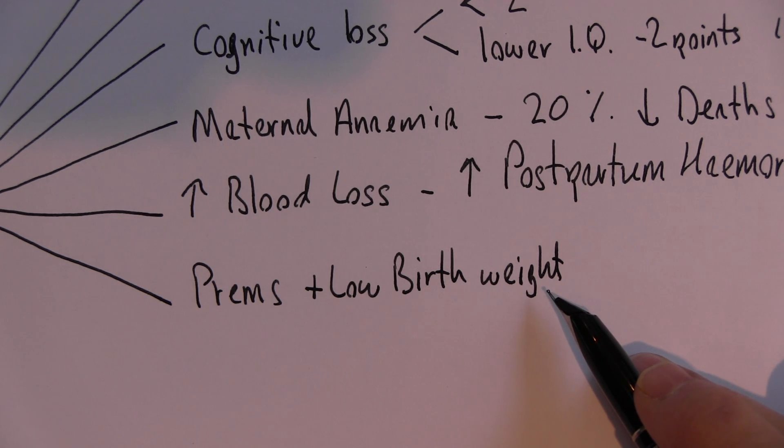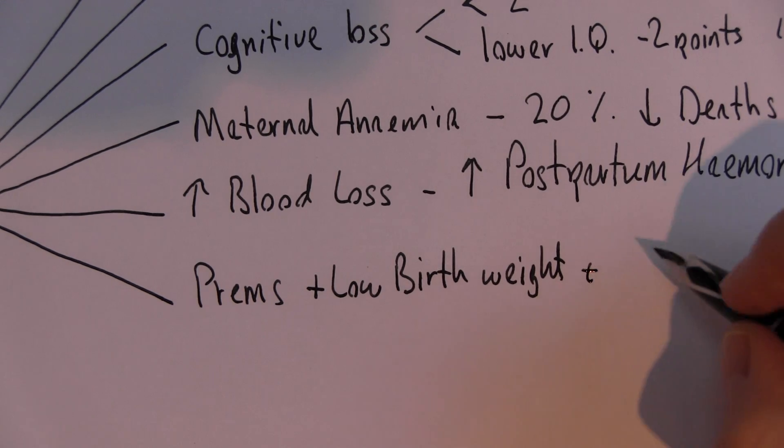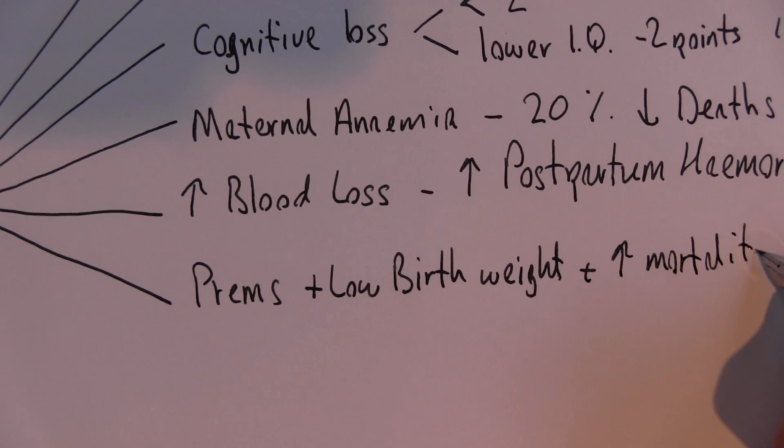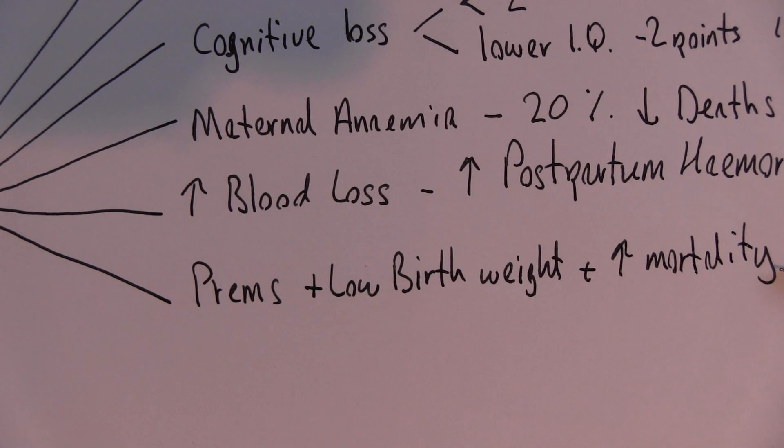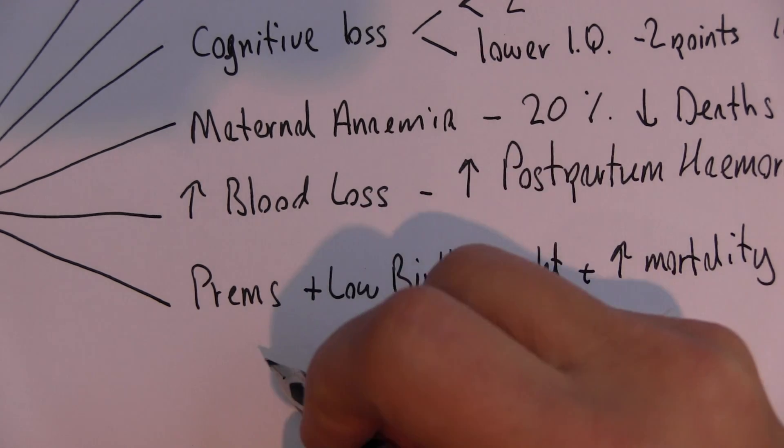And these babies - the more anemic the mother, the greater the mortality of the babies. So mortality in the babies is increased when there's more anemia in the mother. Reduce the anemia in the mother and you will reduce perinatal mortality. And again, this has been quantified by studies.